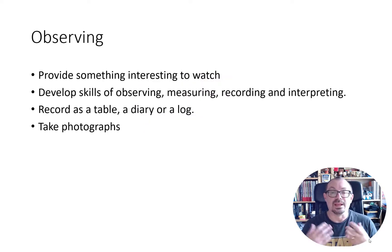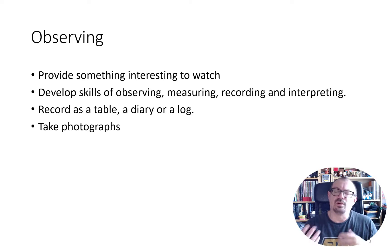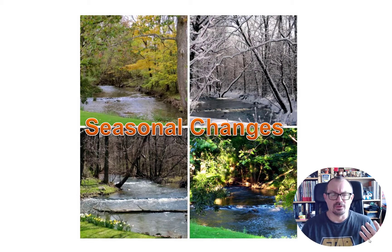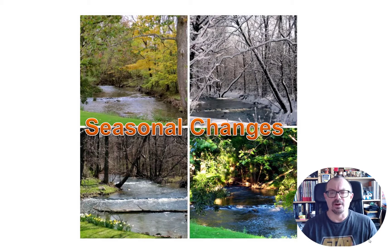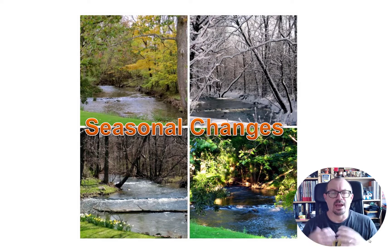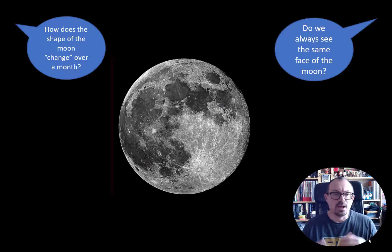Another type of investigation is observing over time. These require something interesting to watch and observe, developing children's skills of observing, measuring, recording, and interpreting. It could be a table, a diary, or a log — good opportunities for taking photographs, making notes, annotating photographs, or building up a series of images using a class iPad or digital camera. An obvious example is in Year 1 seasonal changes, photographing the school grounds in September and tracking how trees and plants change through autumn, winter, and into the summer term — a nice long investigation observing over time, not a fair test but a valid scientific investigation.